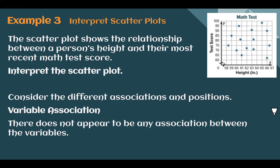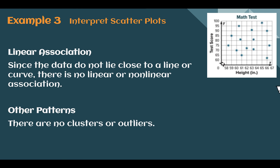Example 3: Interpret scatter plots. The scatter plot shows the relationship between a person's height and their most recent math test score. Looking at the dots, I can't tell if the scores are going up or down based on height, so this would be no association. Since there's no association, the points are not going to line up near any line — linear or nonlinear — so we don't need to choose. There are no clusters, and since we don't know where a line would be, we can't identify any outliers. There's not much we can tell about this graph except that there's no association.